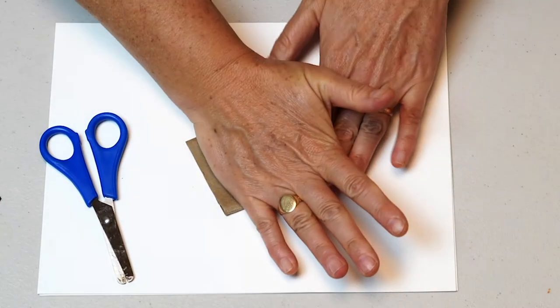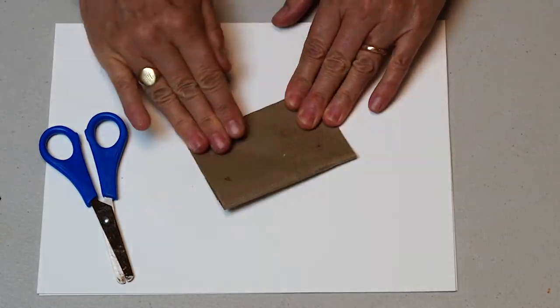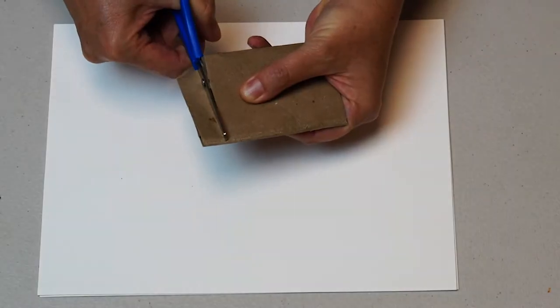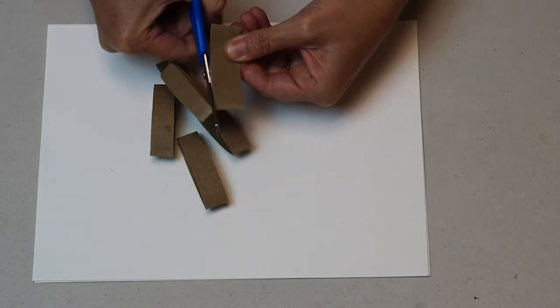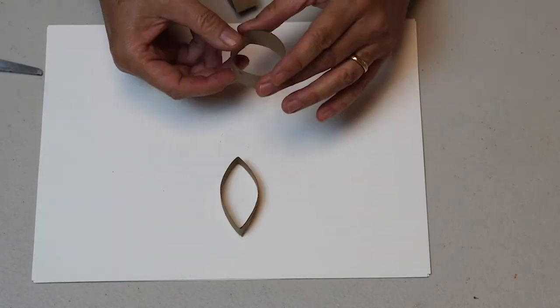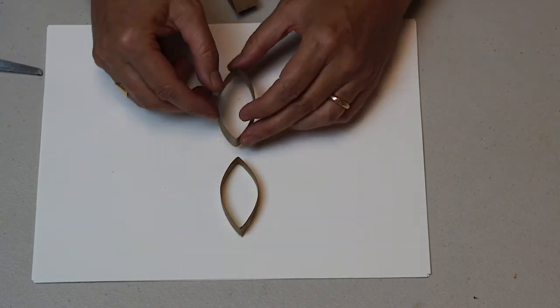So the first thing you'll do is to squash the toilet roll flat and then you're going to cut it into even sized slices, as many as you can.